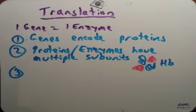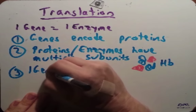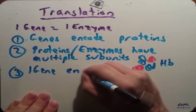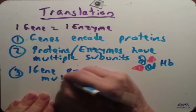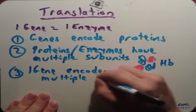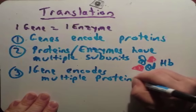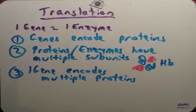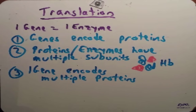The third exception to the one gene equals one enzyme hypothesis is that sometimes one gene encodes multiple proteins through a process called alternative splicing and RNA editing. We've already talked about RNA editing. We haven't really talked about alternative splicing yet, but in general, when introns are removed, sometimes you can remove exons with them, and in that process you will generate more proteins from the same gene.